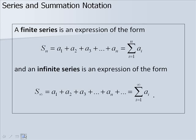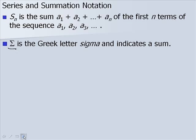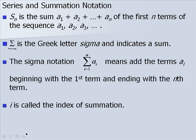A finite series is an expression s sub n equaling a1 plus a2 plus a3, all the way up to a sub n, and it can be written using summation notation as the summation from i equal 1 to n of a sub i. An infinite series is written as the summation from i equal 1 to infinity of a sub i. The symbol sigma indicates a sum, and i is called the index of summation.